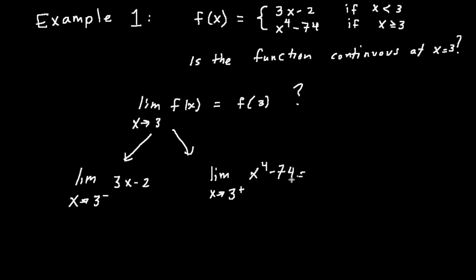We'll determine if the limit even exists before continuing. Coming from the left, using direct substitution, we get seven. Coming from the right, three to the fourth is 81 minus 74, we also get seven. So the limit as x approaches three of the function is seven.